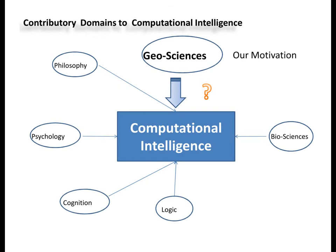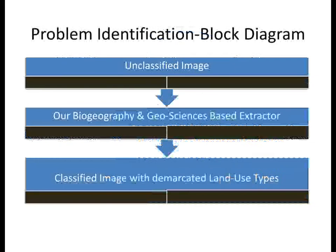Our motivation for the proposed work is the absence of geosciences as a contributory domain for the development of computational intelligence models. The input is taken as an unclassified image to which a biogeography and geosciences based extractor is applied, and the output is obtained as a classified image with demarcated land use types.